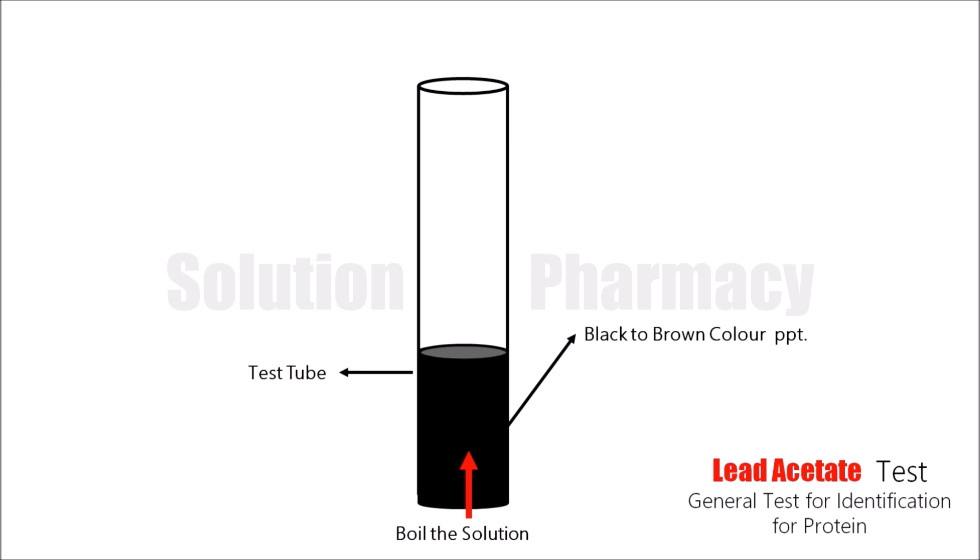And if in our sample no black to brown color precipitate forms after performing the lead acetate test, it means in our sample sulfur-containing amino acid is absent. Or you can say sulfur-containing amino acid is absent in the given protein sample. So this is all about lead acetate test. Thank you very much for watching this video.